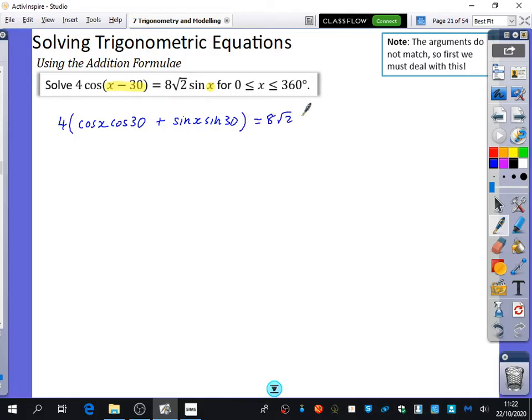And then on the right-hand side, we've just got 8√2 sin x. You can see why I wanted you to memorize what the sine and cos of 30 are. What's the sine of 30? Half. Sine of 30 is a half, so cos of 30 is √3 over 2. So I'm going to have 4 multiplied by cos x multiplied by √3 over 2 plus, don't forget the 4, 4 multiplied by sin x multiplied by sin 30, which is a half, which equals 8√2 sin x.